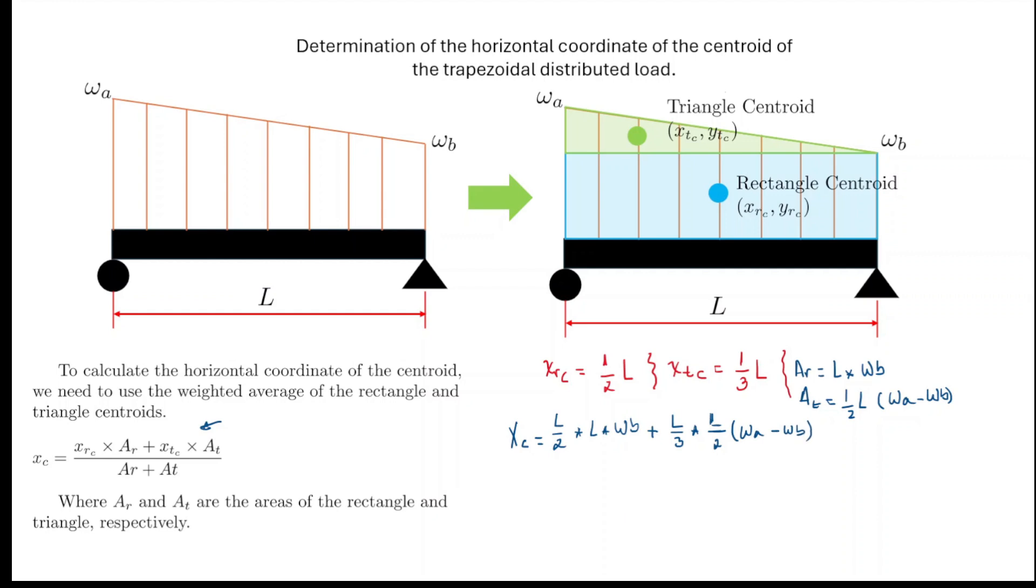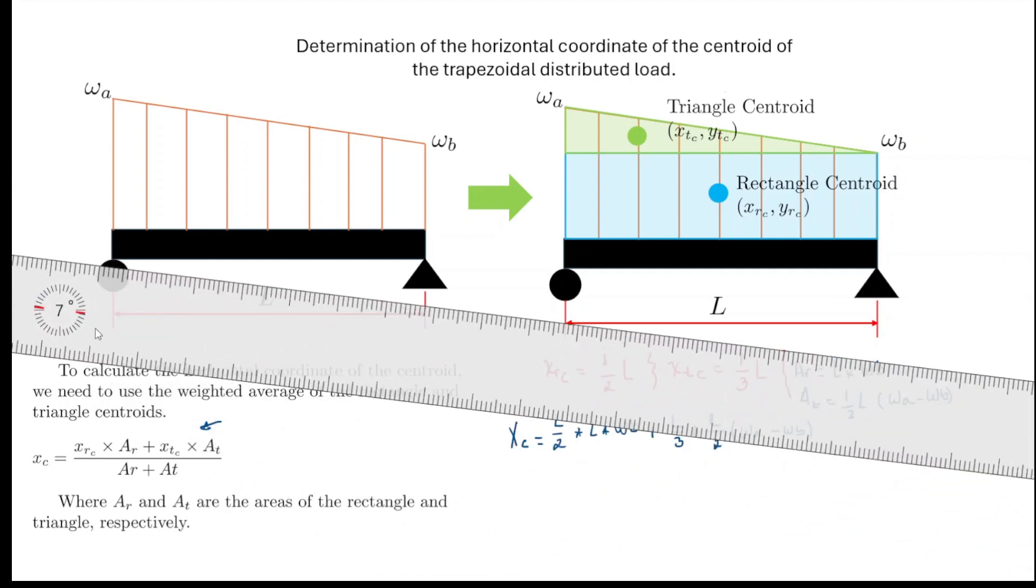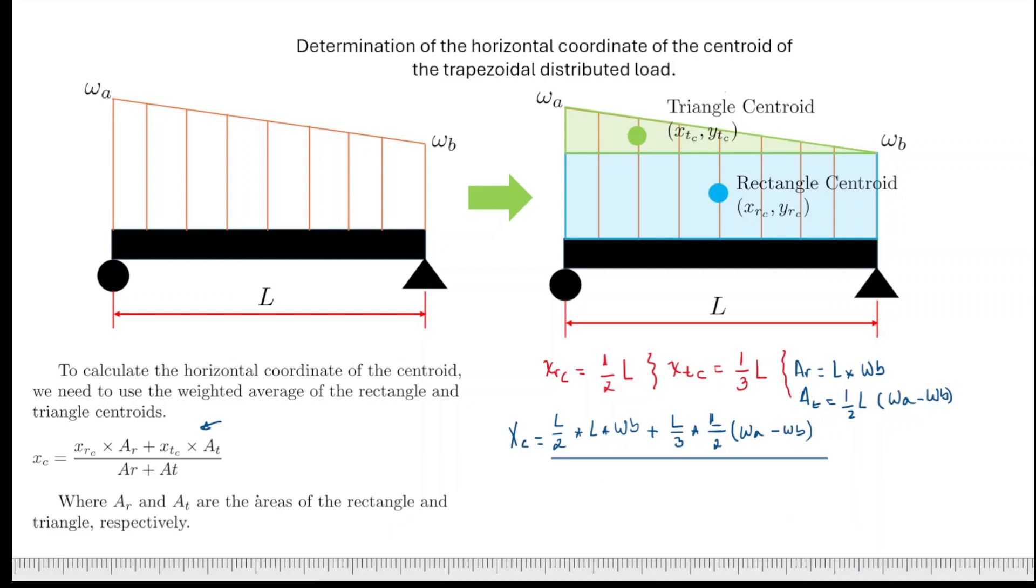And this is going to be divided by the sum of both areas, and that's going to be L times WB plus L/2 times WA minus WB.